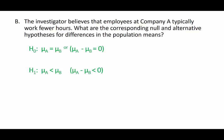And the alternative hypothesis is that the mean number of hours in Company A is fewer than or less than the mean number of hours in Company B. So we can say μ_A is less than μ_B.